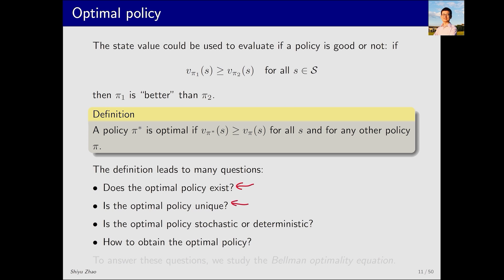The second question is about the uniqueness of the policy. Is the optimal policy unique, or could there be multiple optimal policies? The third question is, is the optimal policy stochastic or deterministic? Sometimes we prefer deterministic policies for which, in a given state, it's definite which action should be taken.